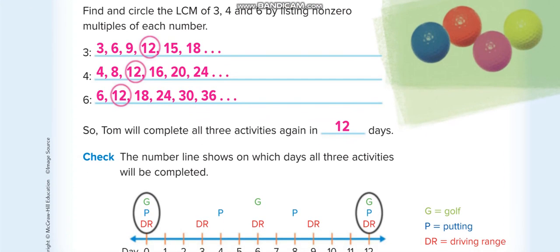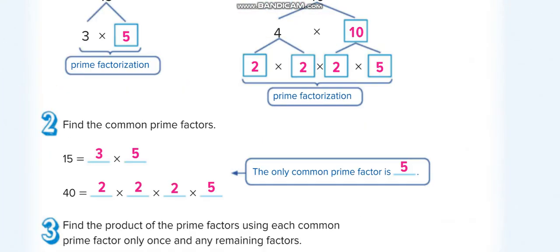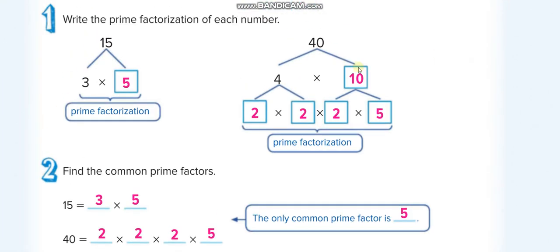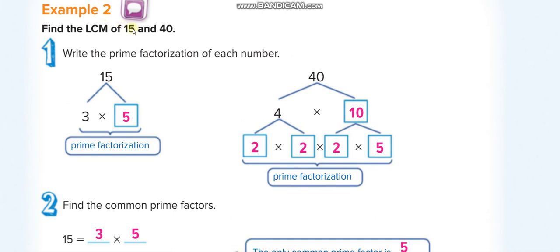There is another way of finding the least common multiple using prime factorization, like we used for the greatest common factor. For the LCM of 15 and 40, first find the prime factorization. Break the numbers: 3 times 5 gives you 15. For 40, break it as 4 times 10, then 4 into 2 times 2, and 10 into 2 times 5.